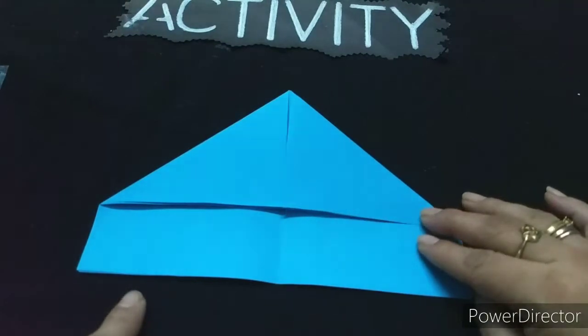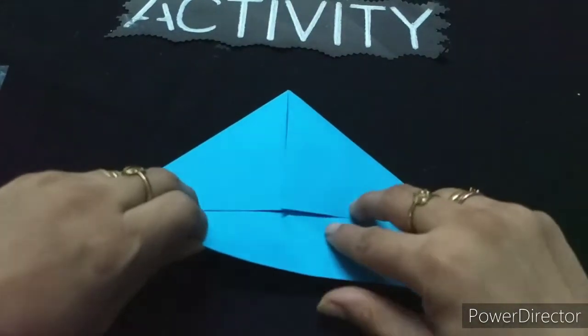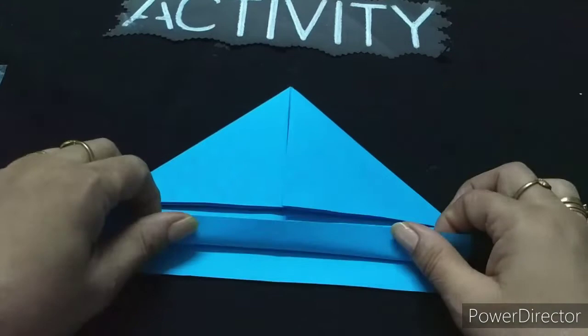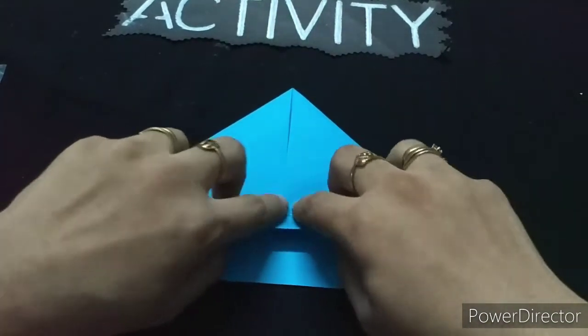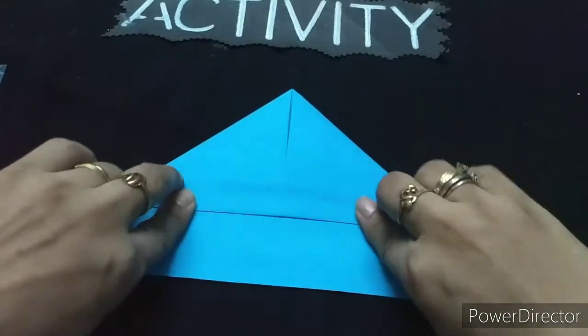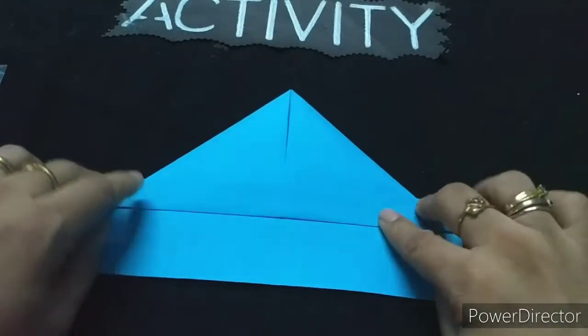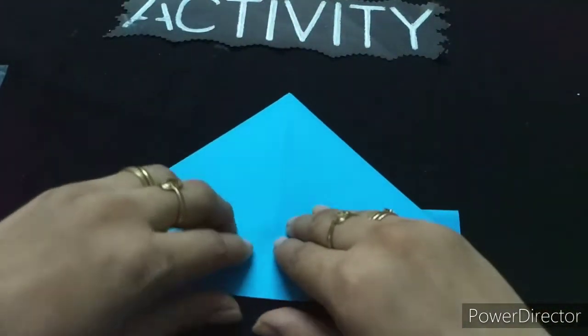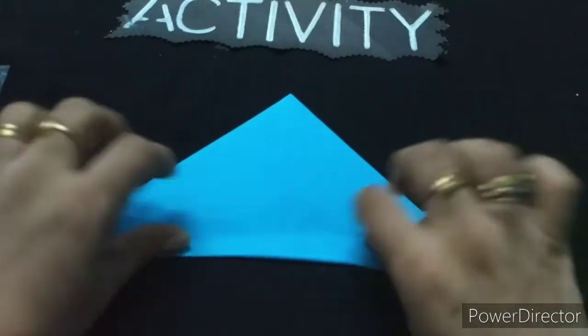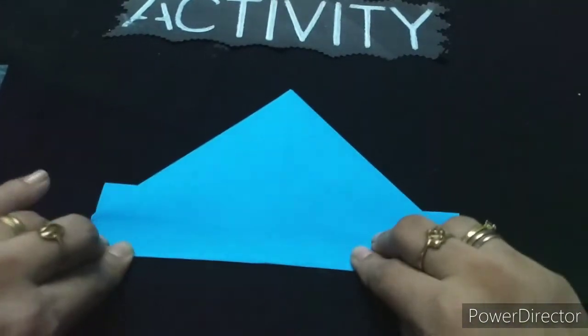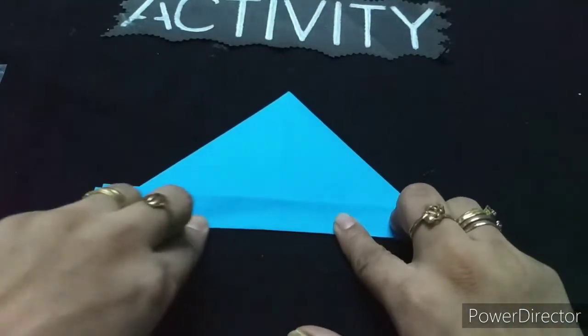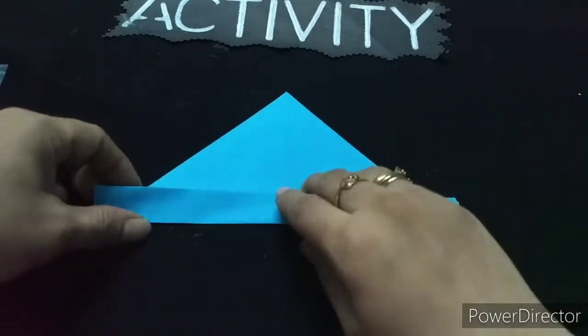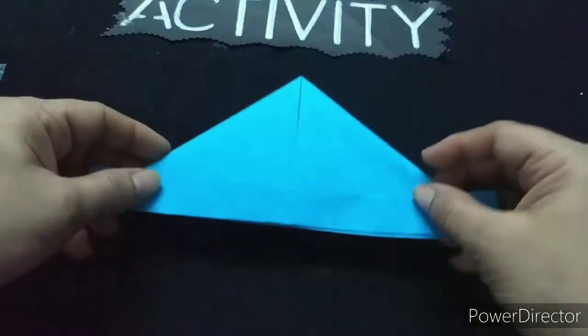See, it will become like this. Now we have two folds here. We will fold it like this, and then fold it like this. See children, now we will reverse it. After this, we will fold it like this and press it here. And again, press it like this. Now we will reverse it again.